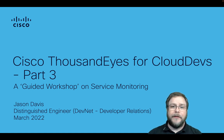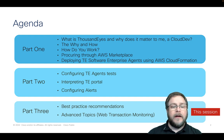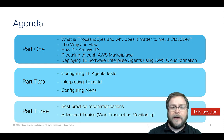This is part three of our Cisco ThousandEyes for Cloud Developers guided workshop. In part three we're going to cover best practice recommendations and advanced topics like web transaction monitoring. Part one covered the ThousandEyes technology, how to procure it from AWS Marketplace, and how to deploy it using AWS CloudFormation. Part two covered how to configure ThousandEyes agents, interpret the ThousandEyes portal, and configure alerts.